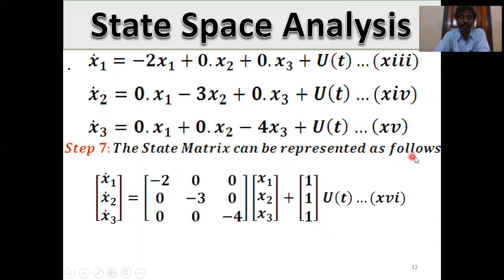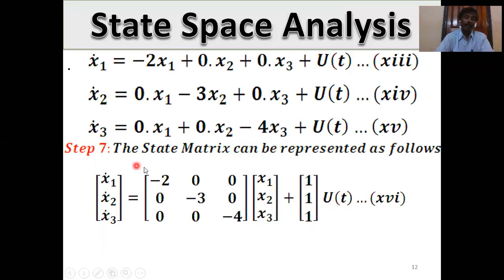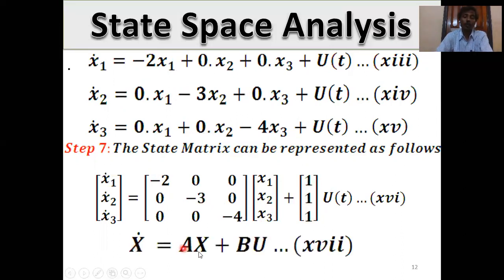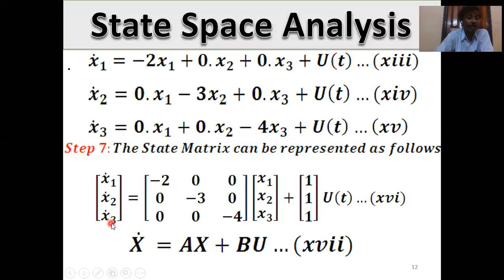The state matrix can be represented as follows. Left-hand side: [x₁̇, x₂̇, x₃̇]ᵀ. Right-hand side: A = [−2, 0, 0; 0, −3, 0; 0, 0, −4], and B = [1; 1; 1], so the equation is ẋ = Ax + Bu(t). This is a diagonal matrix — the diagonal entries are the roots of the characteristic equation: −2, −3, and −4. Since B = [1,1,1]ᵀ, the system is controllable.